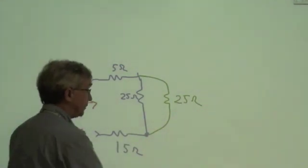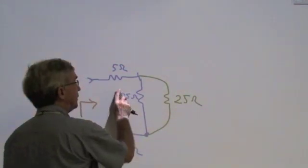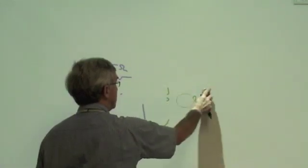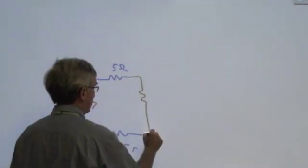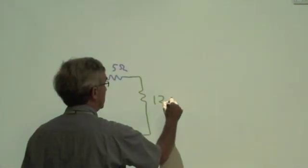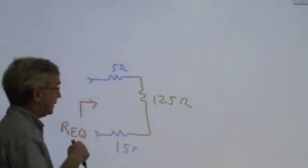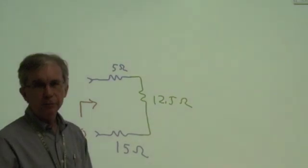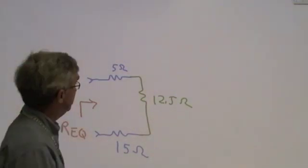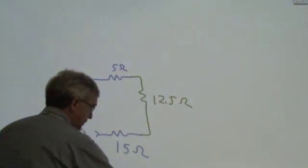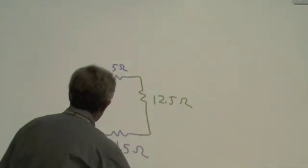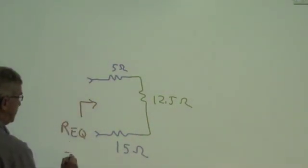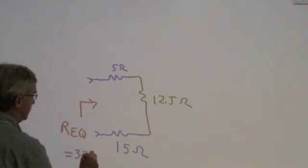25 in parallel with 25 is 12.5 equivalent. And now we have three resistors in series. 5 plus 12.5 plus 15. So the equivalent resistance looking into these points is equal to 32.5 ohms.